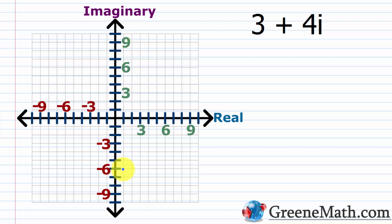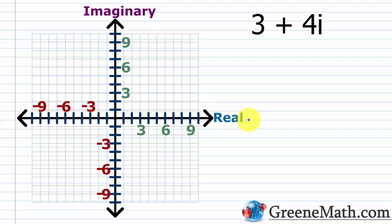With a complex plane, it looks the same as the coordinate plane you've worked with throughout all of algebra. Instead of having a y-axis, the vertical axis is now labeled as the imaginary axis. Then instead of having the horizontal x-axis you're used to, the horizontal axis is now labeled as the real axis. You just need to know that the horizontal axis is the real axis and the vertical axis is the imaginary axis.